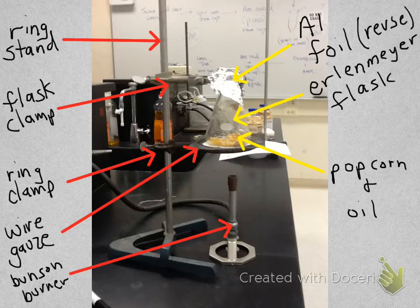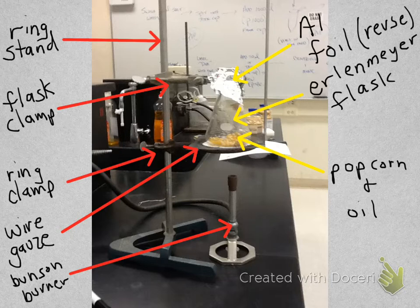And then the actual things you will be adding are your Erlenmeyer flask. There should be some aluminum foil on top. If possible, we use this. The aluminum foil also should have a few pencil marks put in it so that air can escape. I mean, actually water vapor can escape. And of course at the bottom will be your popcorn and oil. So again, this apparatus should be set up at your station and ready to go.